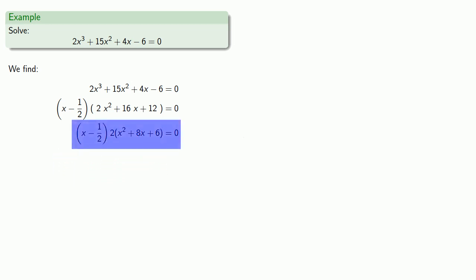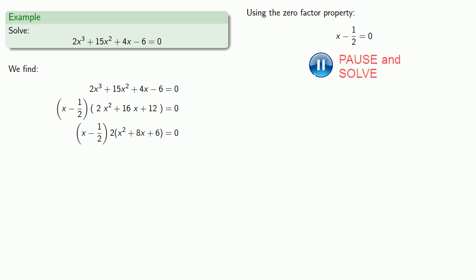So now we have product equal to 0, so we know that one of the factors equals 0. So either x minus 1 half is 0, which gives us a solution.